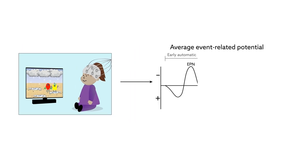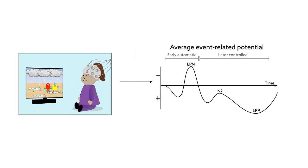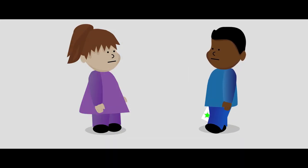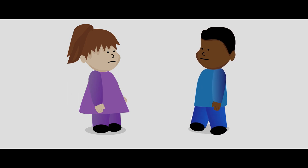To determine whether the early automatic or later controlled neural activity predicted actual moral behavior, the researchers then assessed the children's generosity based on how many stickers they were willing to share with an anonymous child.